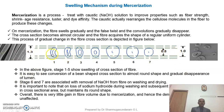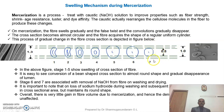Please look at the figure — the lumen will gradually disappear as soon as fiber swelling takes place. Stages 6 and 7 are associated with the removal of sodium hydroxide from the fiber on washing and drying. It is important to note that on loss of sodium hydroxide during washing and subsequent drying, the fiber shrinks in cross-sectional area but maintains its round shape. Even in the absence of sodium hydroxide, the fiber maintains its round cross-section. Overall, there is little gain in fiber volume due to mercerization, and hence the density of the fiber remains unaffected.